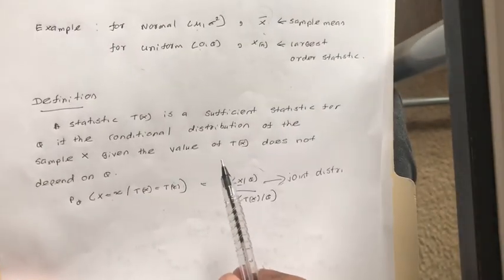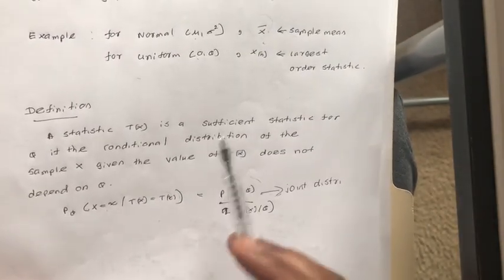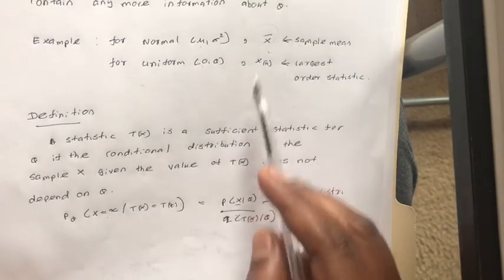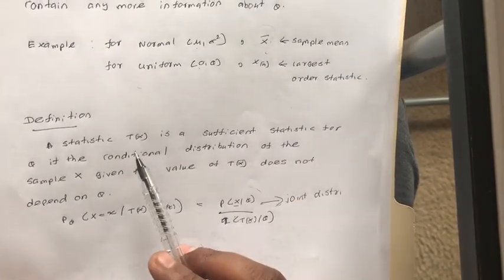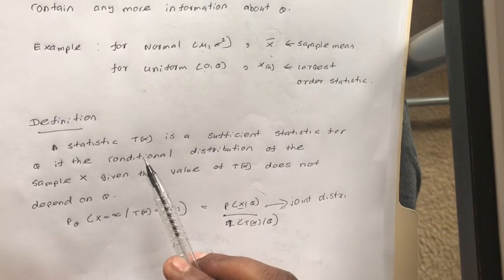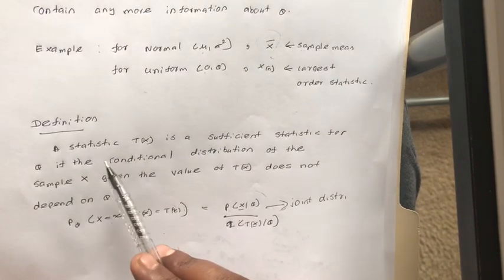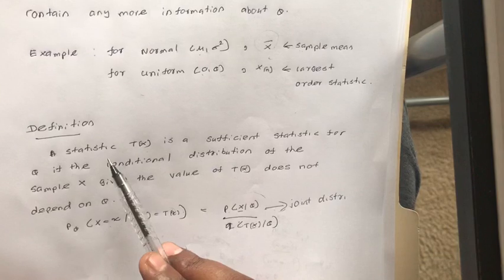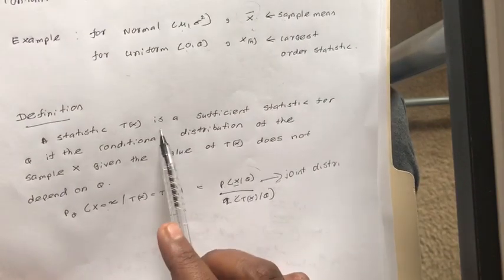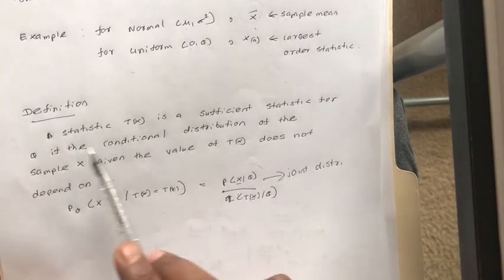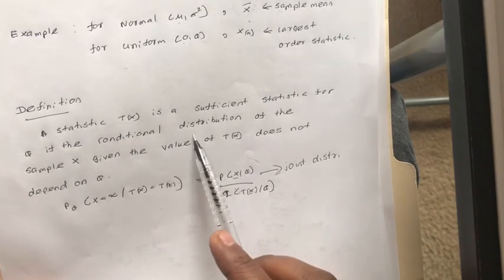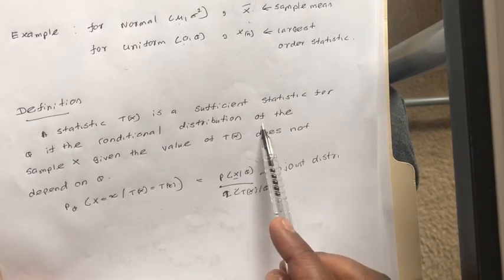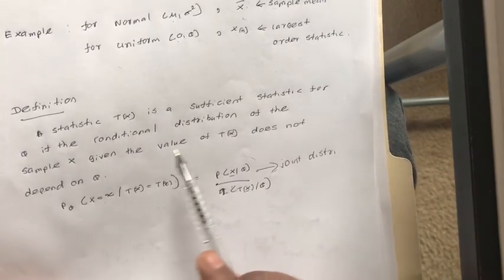Now we are going to talk about how to calculate or derive a sufficient statistic. There are two methods to do that. The first one is based on the definition of the sufficient statistic. The definition is as follows: a statistic T(X) is a sufficient statistic for theta if the conditional distribution of the sample X, given the value of T(X), does not depend on theta.